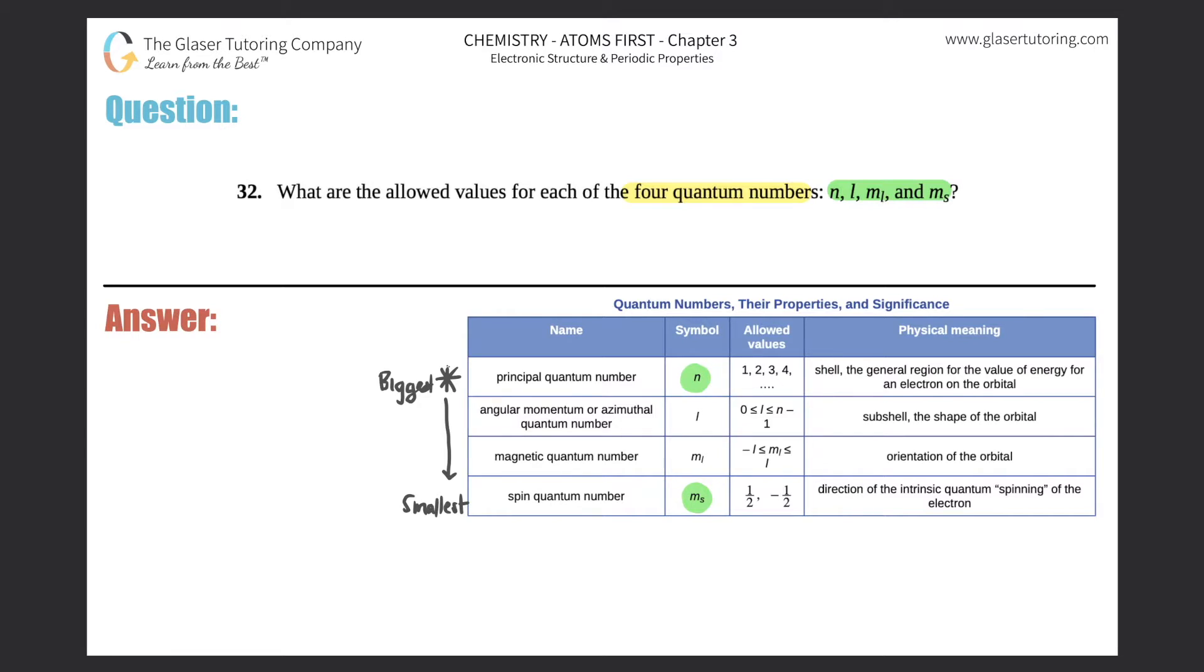n represents the principal quantum number, which is the shells around the nucleus. Technically, n has to start with one and can go all the way to infinity. Remember that n cannot start with zero and always starts with one. So all possible numbers for n is one to technically infinity: one, two hundred, five hundred, a thousand and twenty, etc.